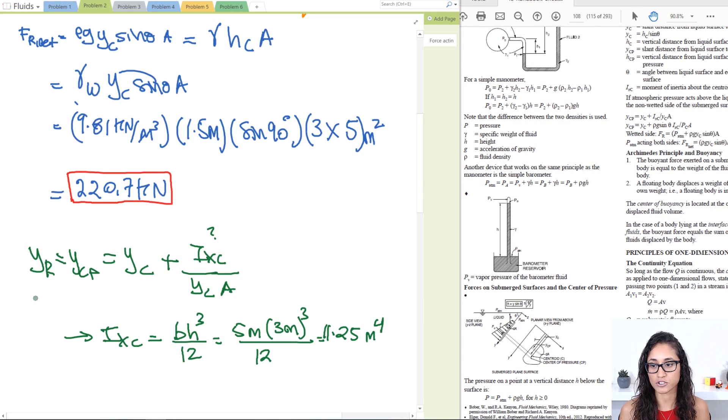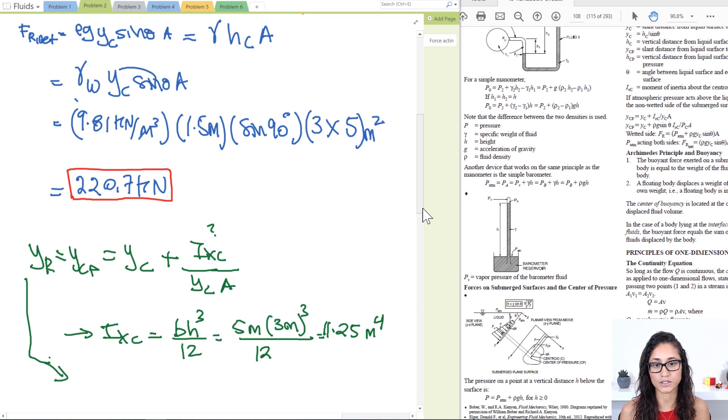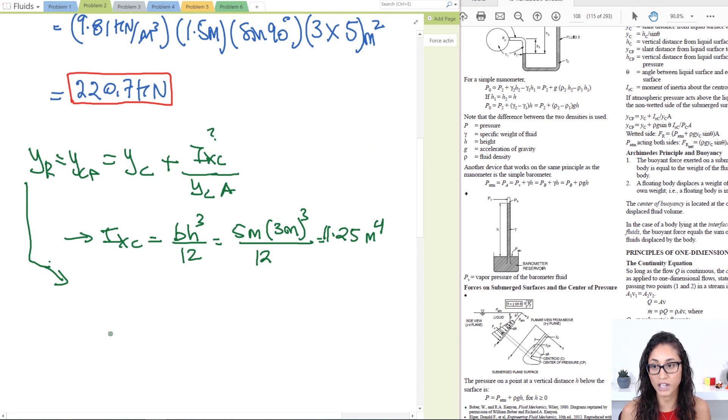So now we can just go back here and just plug in the numbers in this equation so we can find the location of our force. So we have yc which is 1.5 meters, plus the moment of inertia which is 11.25 meters to the fourth, divided by yc which is 1.5 meters, times the area which is 3 meters times 5 meters.